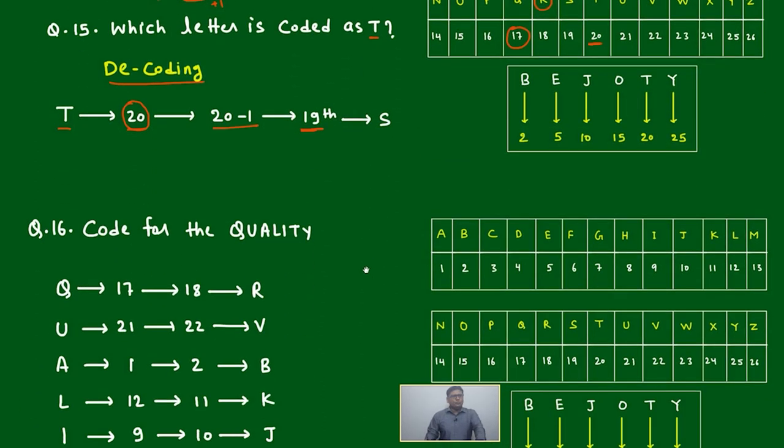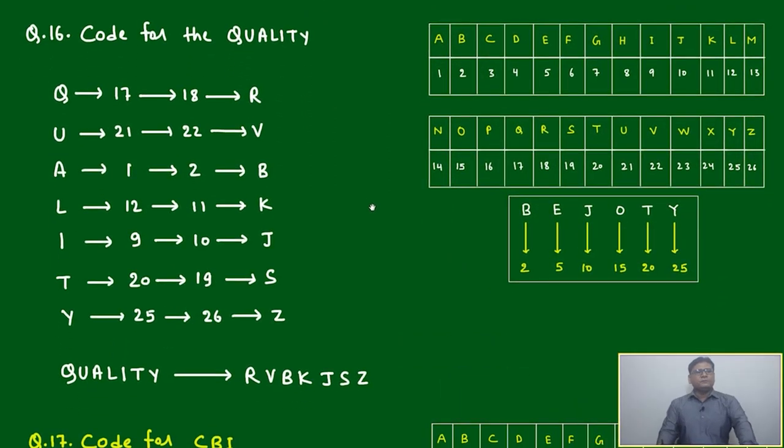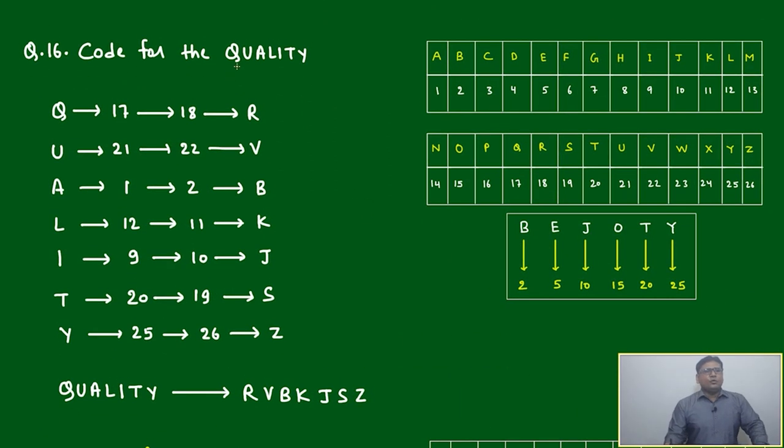Let's look at a few more questions based on the same concept. Question 16: code for QUALITY. Every letter we have to check if it is odd or even. Q is 17, it is odd, will jump by +1, it will become R. U is 21, it is odd, it will jump by +1, it will be V. A is 1, again it is odd, jump by one, it will become B. L is 12, it is even, it will go back by one, it will become K.